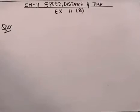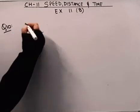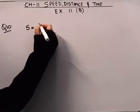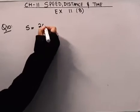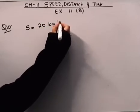Hello everybody, today we will be doing question number 10 from exercise 11b. The question is: a cyclist travels at a speed of 20 km per hour.